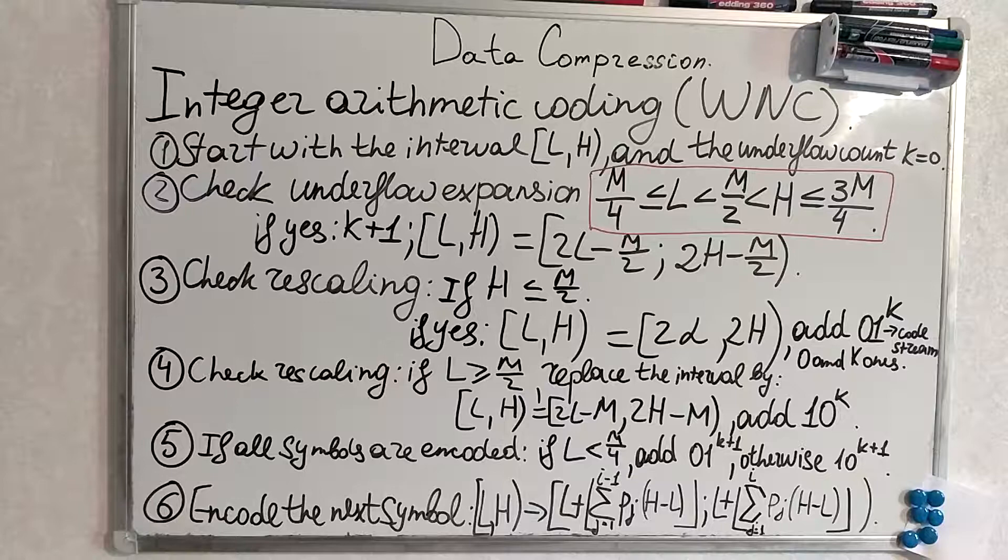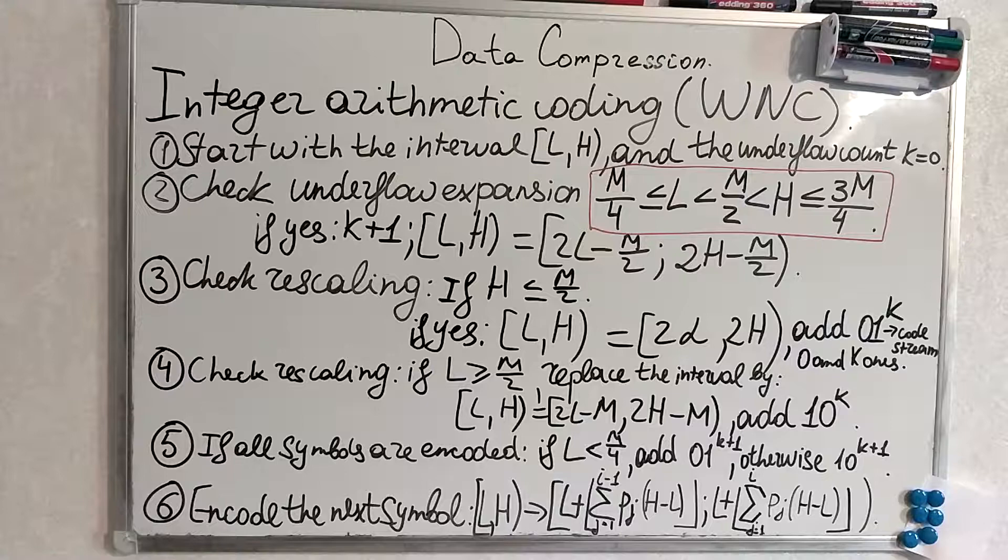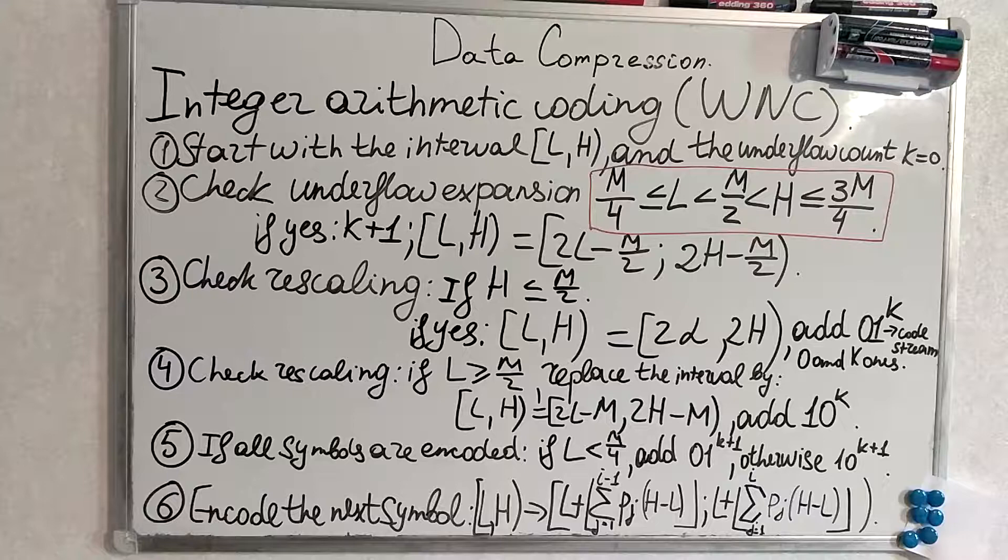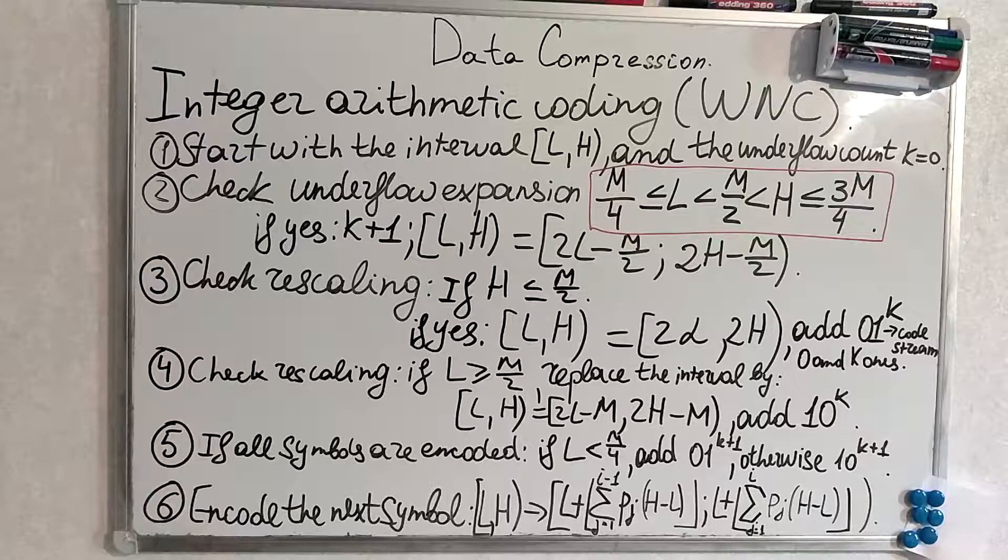If yes, we update the interval and add 0, 1 to the code stream. It means that we add 0 and k once. If k is two, we add two ones, one zero and two ones.